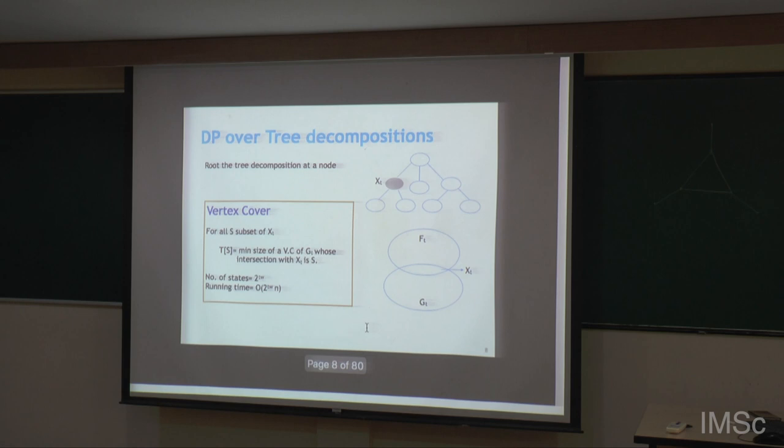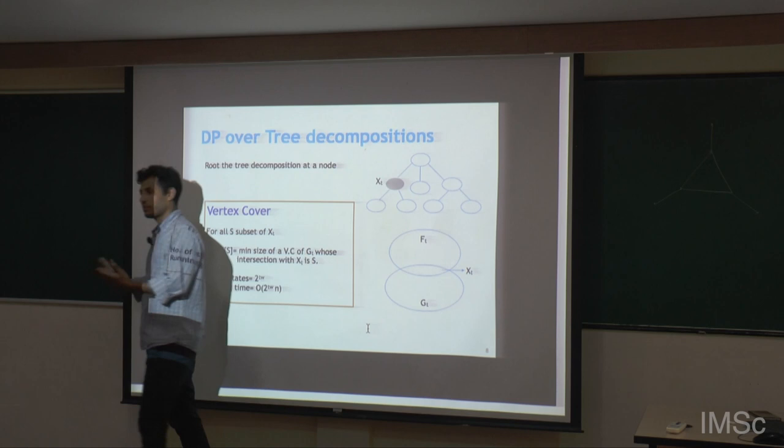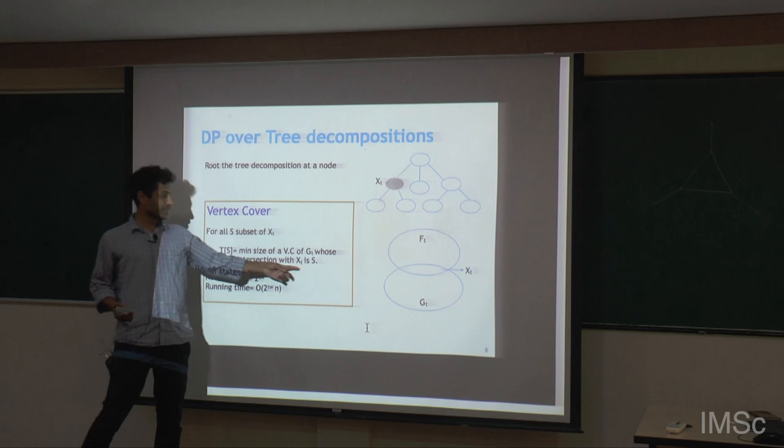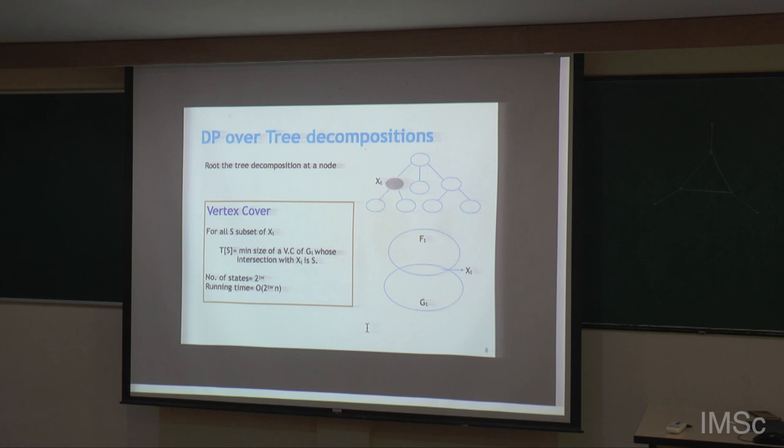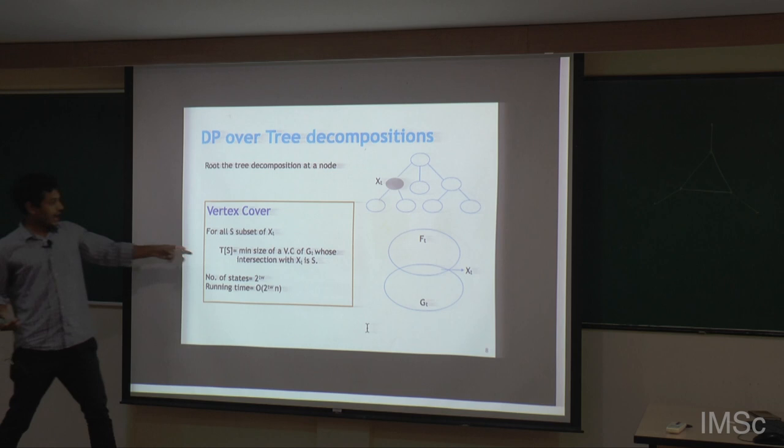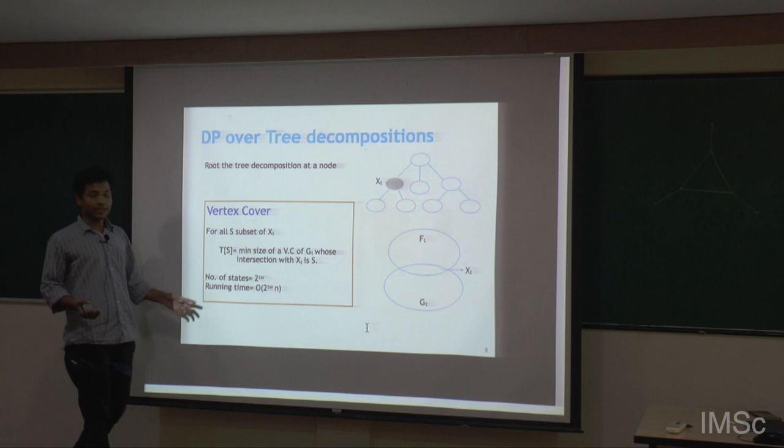For example, for vertex cover, for all S subset of this boundary, we ask: what is the best vertex cover for the graph G at that node whose intersection with X_t is S? That information is good enough, and we can compute this in a bottom-up fashion. The number of states at each node is 2 to the tree width, and the running time will be polynomial in that.